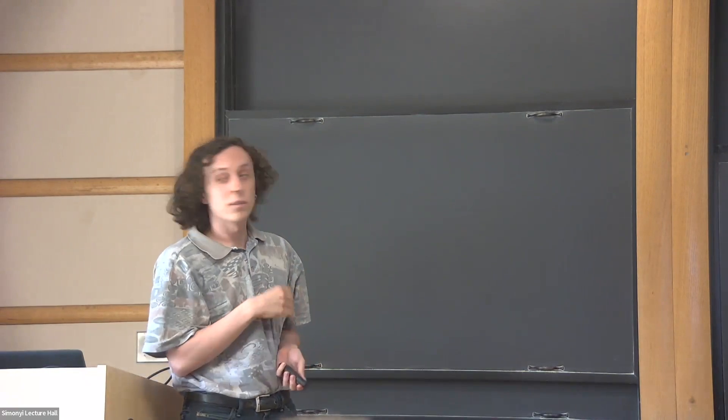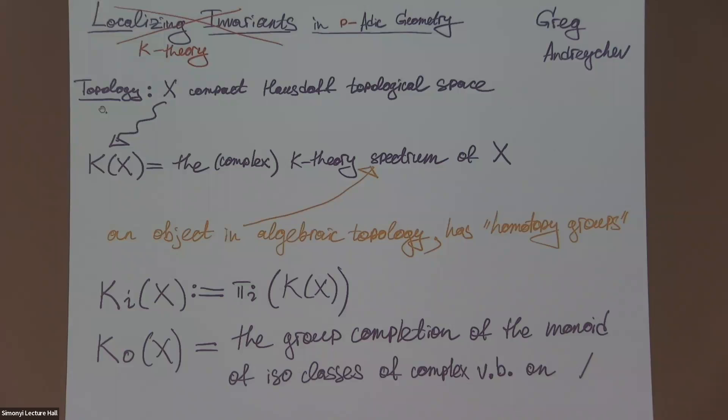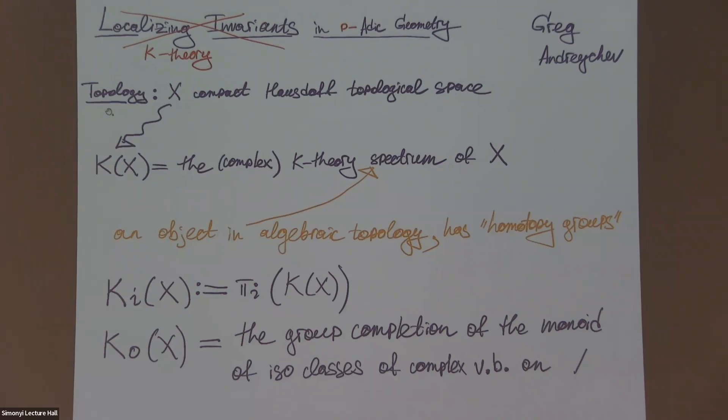Today I want to tell you about one recent development in geometry. For the experts, I want to say that there are two major technical components involved, namely condensed mathematics and the K-theory of dualizable categories. I will not talk about that at all. Instead, I want to tell the path towards K-theory.